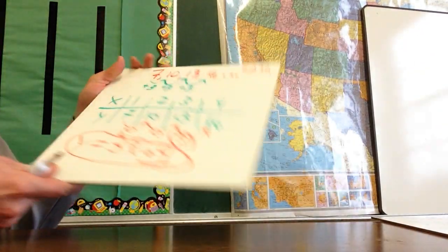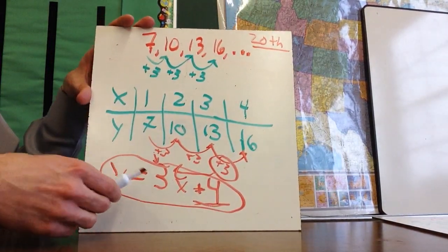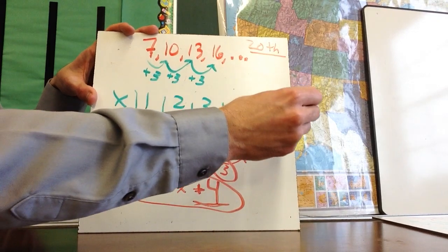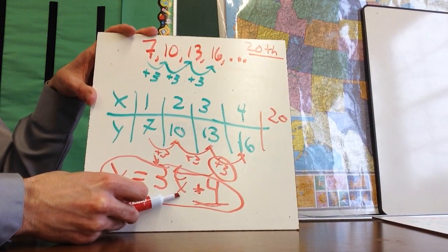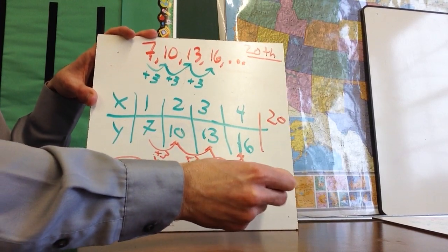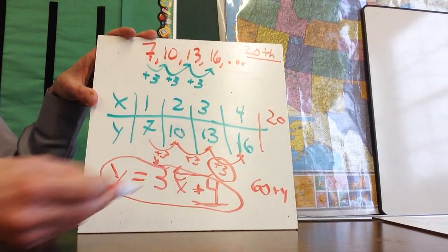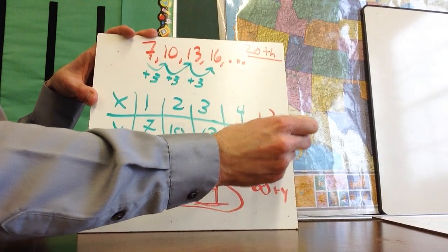And you could do the same thing on the problem that we just did. I'll come back. I know I'm kind of going out of order, but I want to find the 20th term. The 20th term is just going to be, if I substitute a 20 here, three times 20 is 60 plus four. So the 20th term is 64.